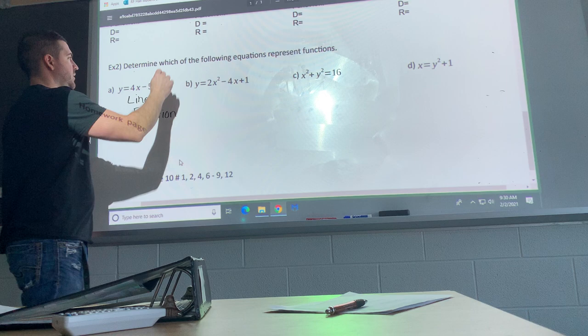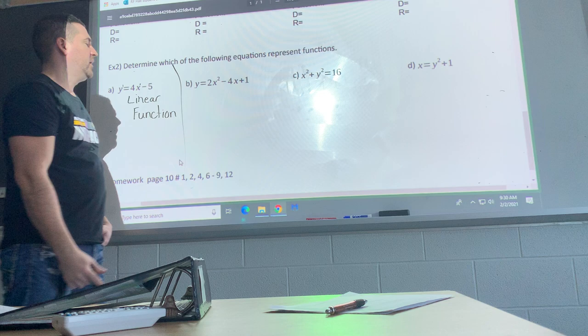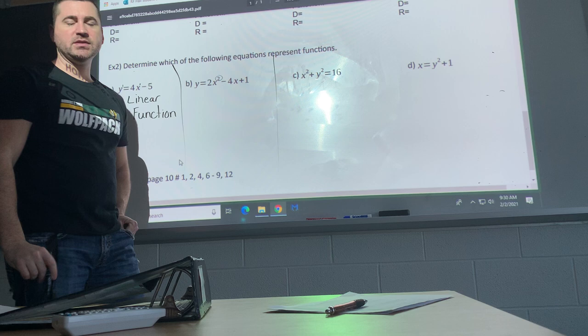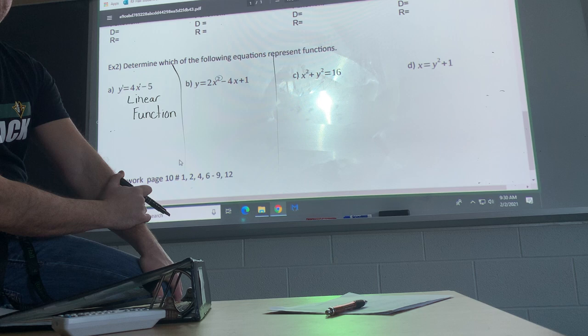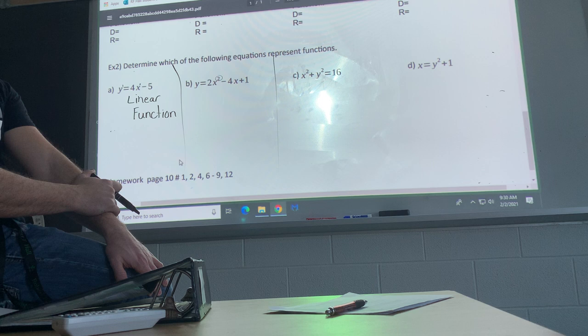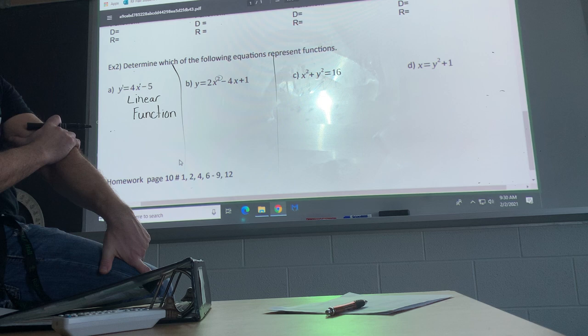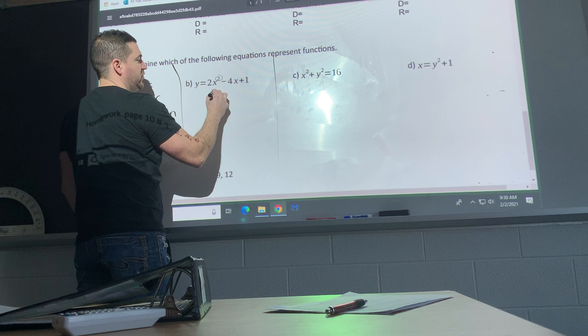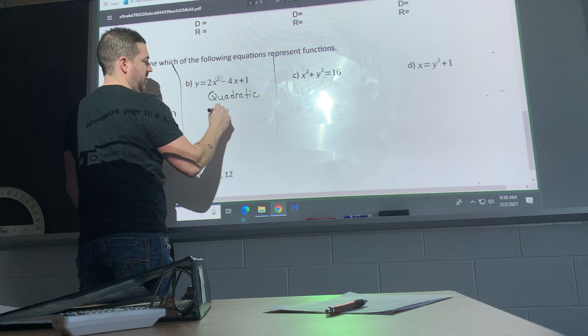Okay, so these have exponents of one so they're linear. Now we look at the next one. We have a power of two on our x, so now that makes a... yes, a parabola. Okay so we have an x squared, so that's a parabola or a quadratic function. So this is a quadratic and it is a function.